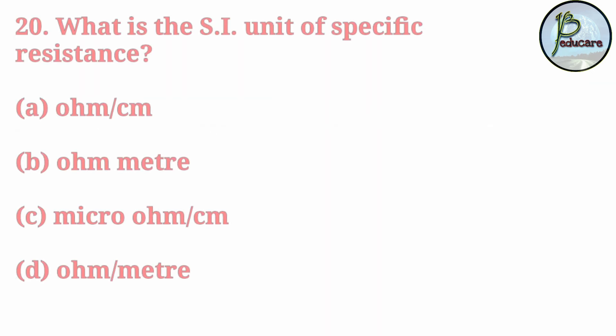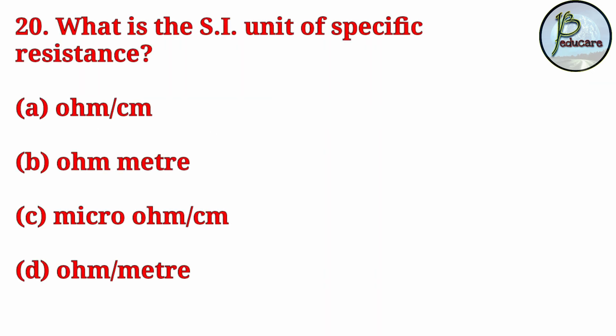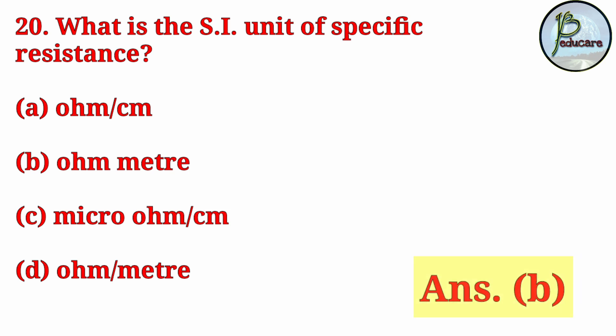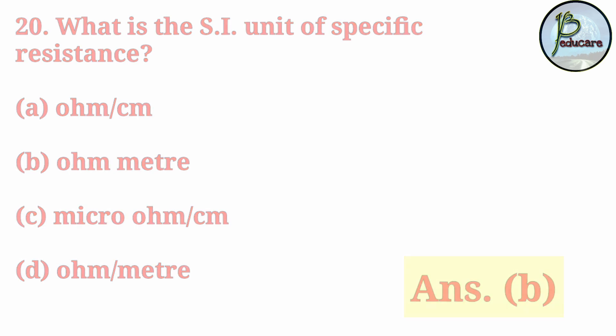Next question: What is the SI unit of specific resistance? The SI unit of specific resistance or resistivity is? The correct answer is B, ohm meter. Resistivity or specific resistance SI unit is ohm meter.